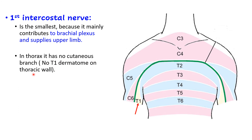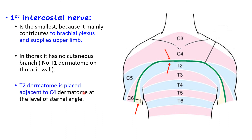T1 has no dermatome on the thoracic wall. Looking at the dermatome map, after C4 we can see the T2 dermatome — placed adjacent to C4 at the level of the sternal angle. So skin up to the sternal angle is supplied by C4, then T2 follows, while T1 supplies skin and structures in the upper limb.